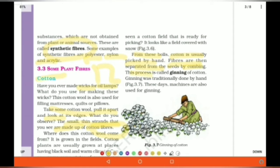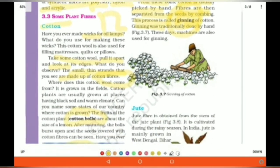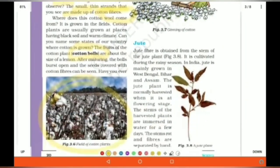This process is called ginning. What's the process when the cotton cloth or the fiber is separated from the seed? It's called ginning. Ginning is traditionally done by hand. These days, it's also done with machines.